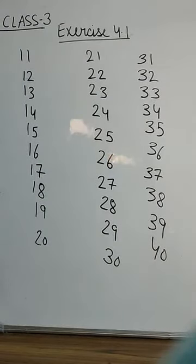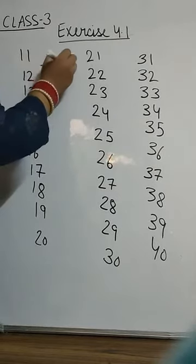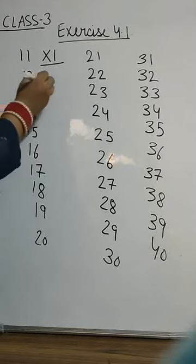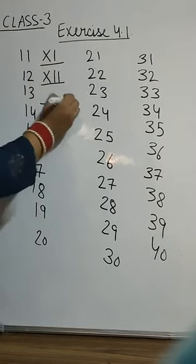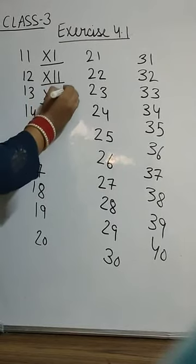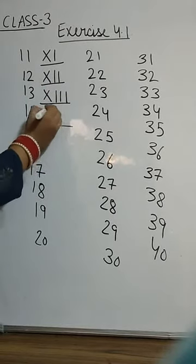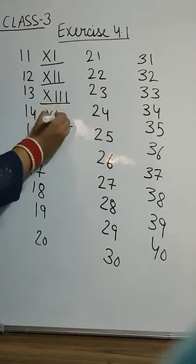I will write the Roman symbols of them. So here you can see this is 11. So how we write 11? That is 10 plus 1. What do you mean by 10? That is X. 1 means this. X, 2 means II. XIII, 14 means X. What is 4? 10 plus 4. That is IV.